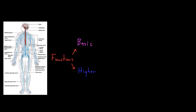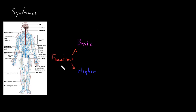Dysfunction of different parts of the nervous system may cause different patterns of abnormalities — either the basic functions, the higher functions, or both. Patterns of abnormal functions are called syndromes, which means patterns of abnormalities. Certain syndromes involving abnormal functions of the nervous system are more common than others because they're caused by neurological or psychiatric disorders that occur more frequently.